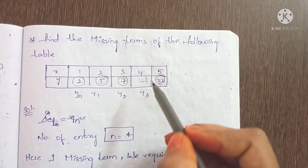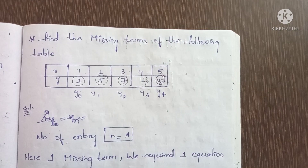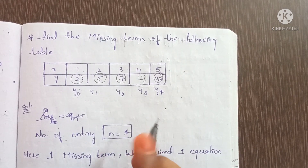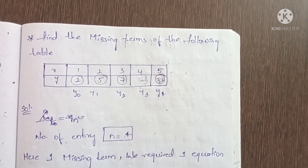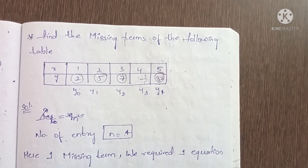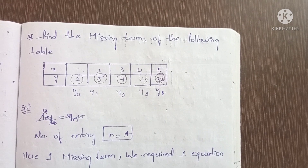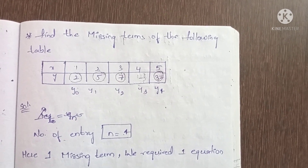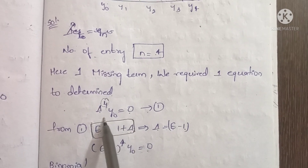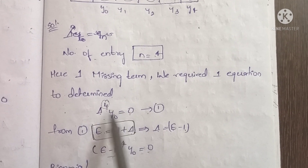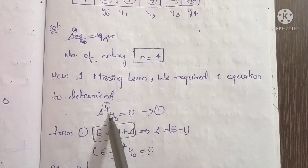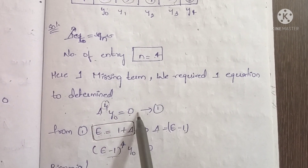Here we have 1 missing term, so we require 1 equation. The equation is delta power 4, y0 equals 0. Number of entries is 4, so delta power 4, y0 equals 0.